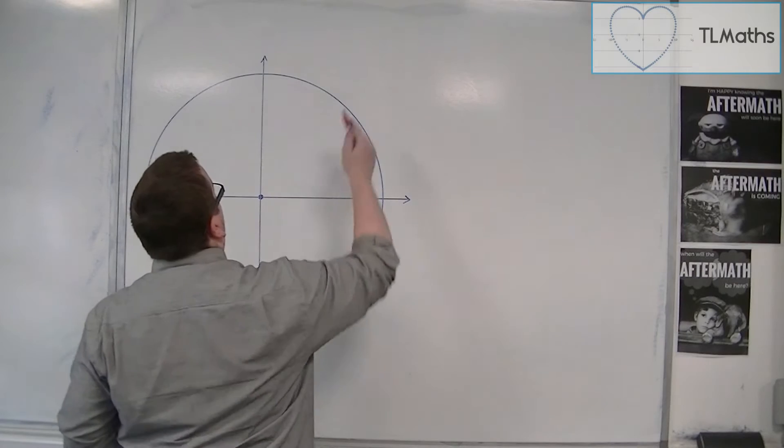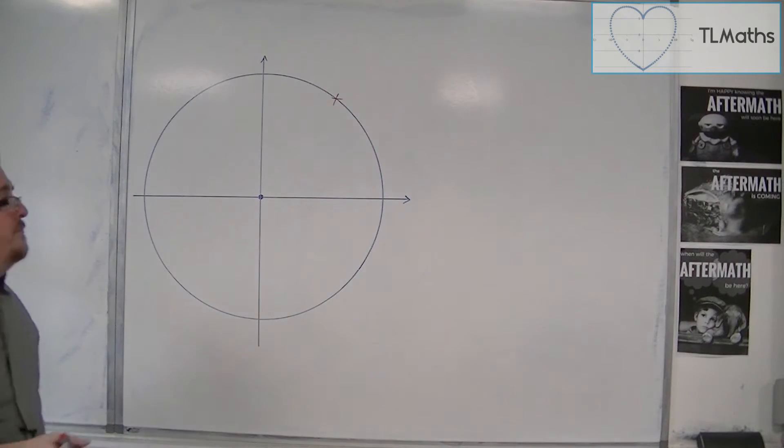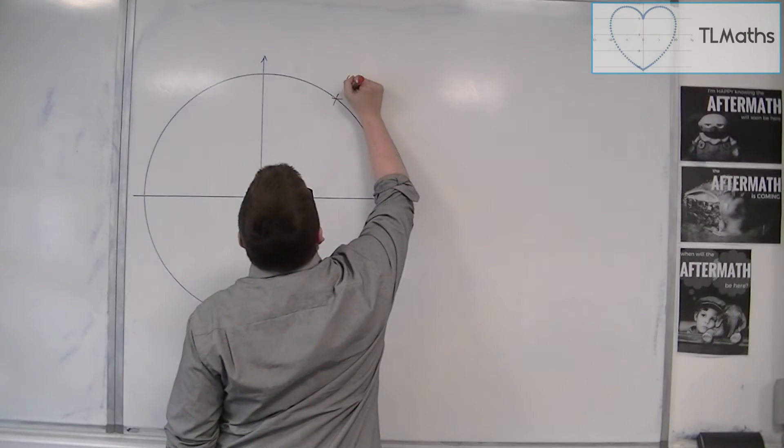In other words, if I just choose a point on the circle, that point there for example, let's give that coordinates of (x, y).